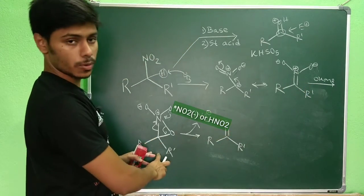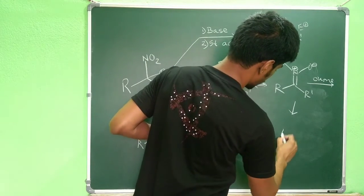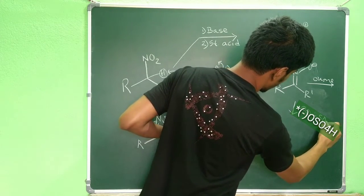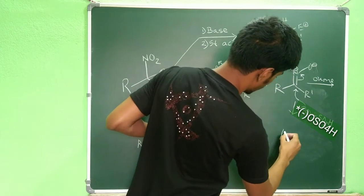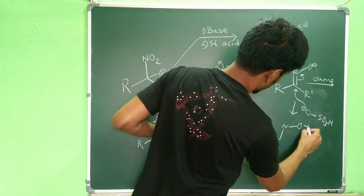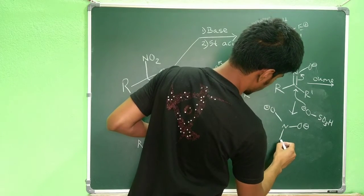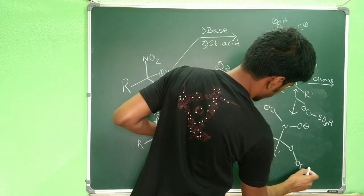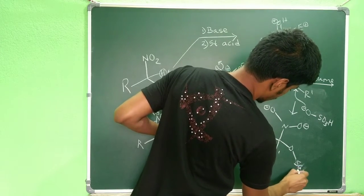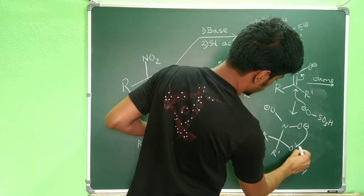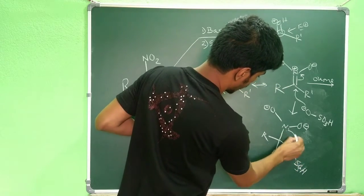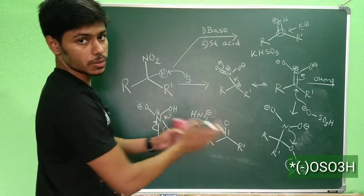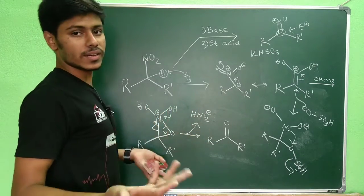The formation of the epoxide equivalent from the nitronate is a two-step mechanism. In the first step, oxone (as -OSO3H) attacks the nitrogen, giving N-O-minus and O-OSO3H on nitrogen. Then the nitrogen lone pair attacks the electrophilic oxygen and the SO3H leaves, forming the epoxide-like intermediate. After this step you get the carbonyl compound. This mechanism with oxone is more interesting than the previous one.